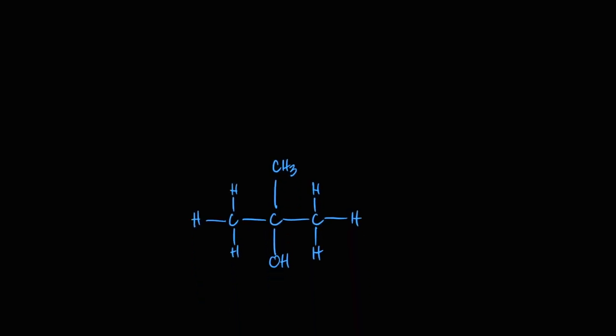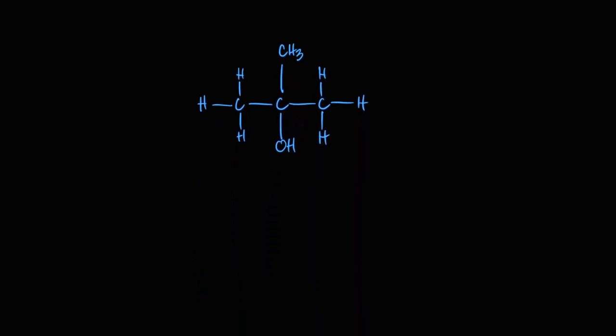Now we'll name alcohols. The same rules apply as for alkenes, but the functional group — the OH group — gets even higher priority than a double bond. The OH group gets the preference in numbering the parent chain, and then all other rules apply.